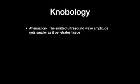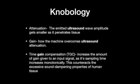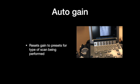Nerves do change as you go more distal — they become more hyperechoic. In the arm, the branches of the brachial plexus appear more whitish. Knobology is a term used to describe the buttons and functions of the different settings on the ultrasound machine. Attenuation describes how the emitted ultrasound wave amplitude gets smaller as it penetrates deeper into tissue. Gain is how the ultrasound machine overcomes attenuation. Time gain compensation increases the gain given to an input signal at a sampling time that increases monotonically, counteracting the excessive sound dampening properties of human tissue.